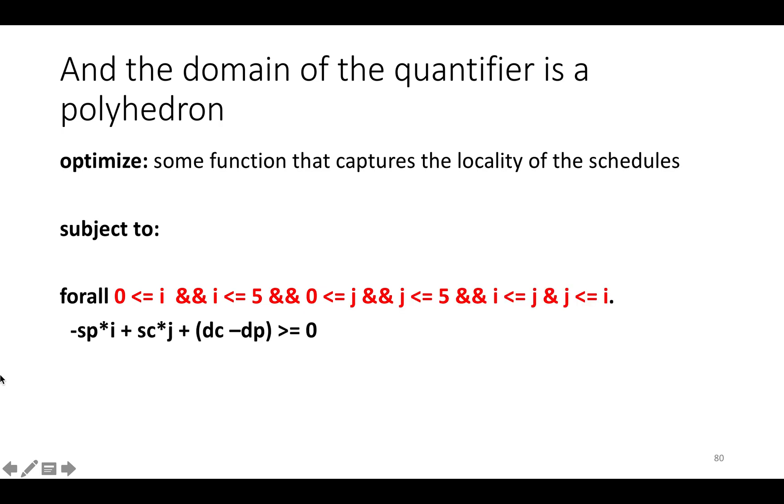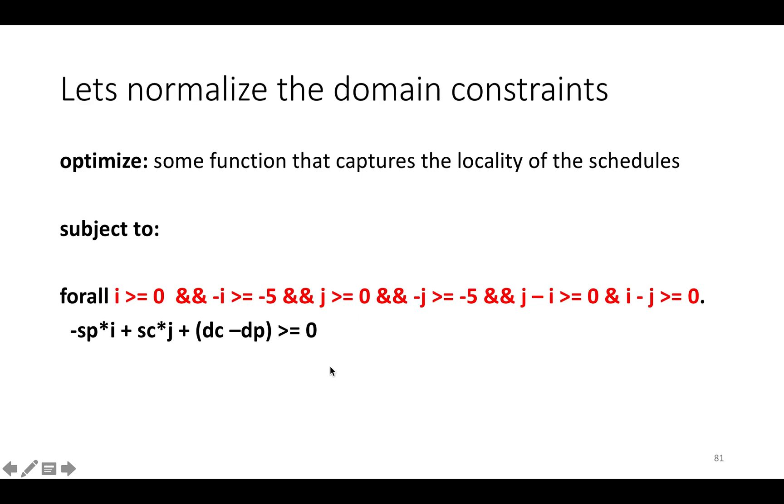This looks a little odd, but if we just normalize the constraints so we blow them all out so that we have one comparator in each constraint expression and then reorganize them a little bit, what we can see is that actually this is a set of linear inequalities. This is basically a matrix a times the vector ij plus b is greater than or equal to zero.